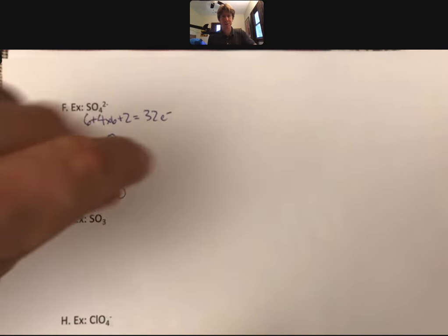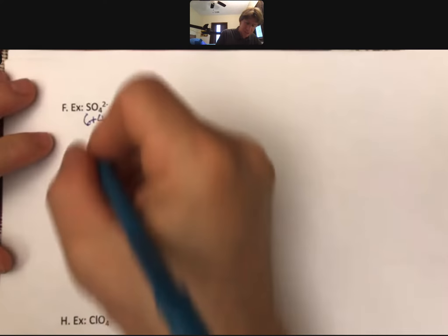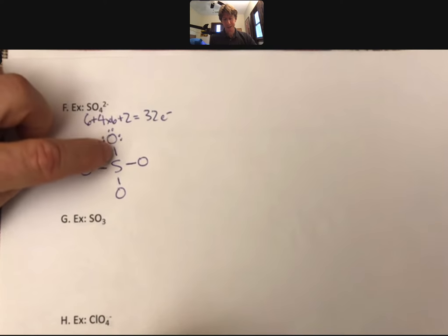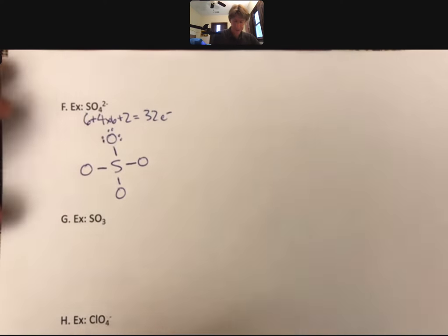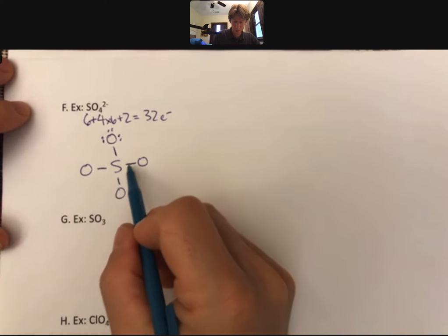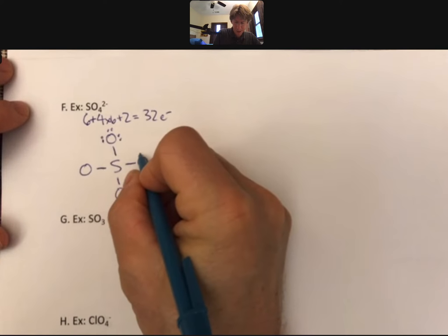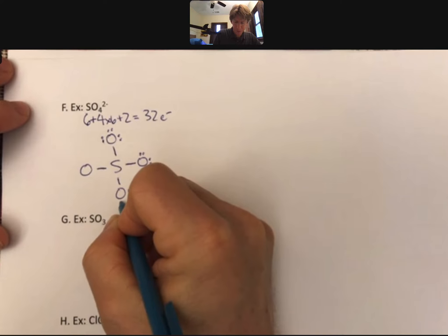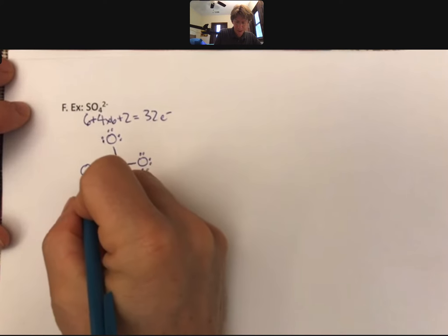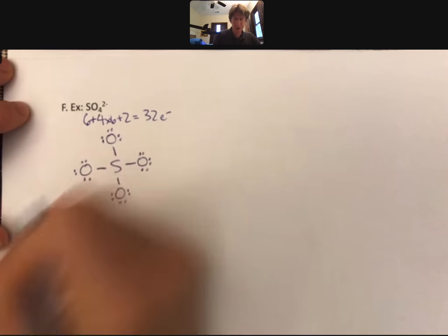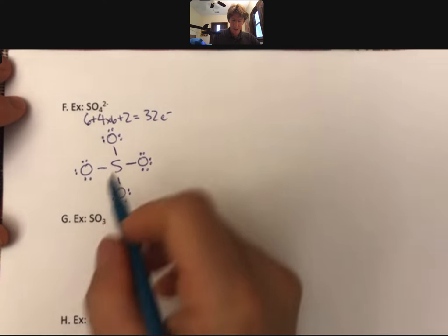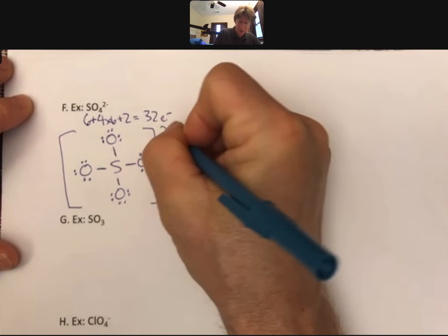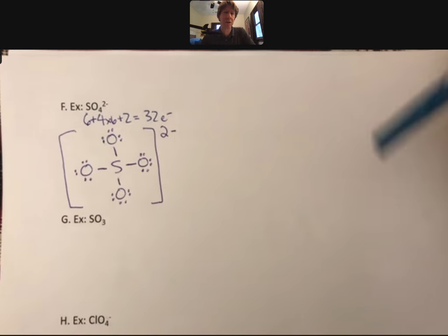And we are then going to sprinkle our valence electrons around the outside. I have two, four, six... [counting up to thirty-two electrons]. Double checking, everything has an octet. Good, put my brackets around it, and the charge. That is a finished Lewis structure for sulfate.